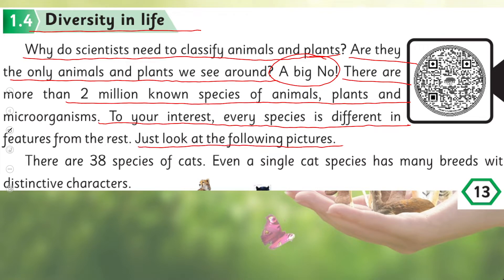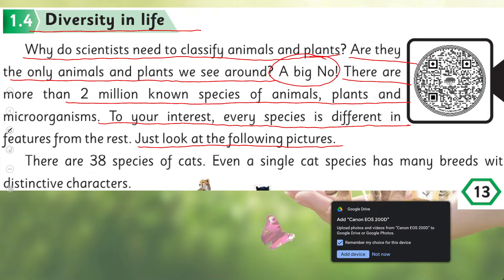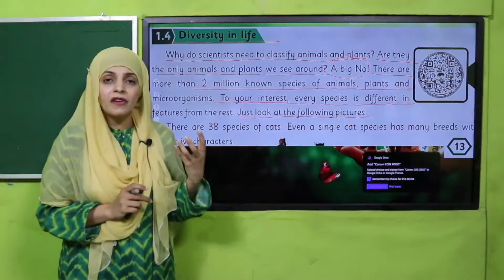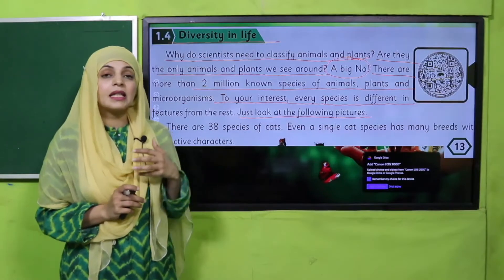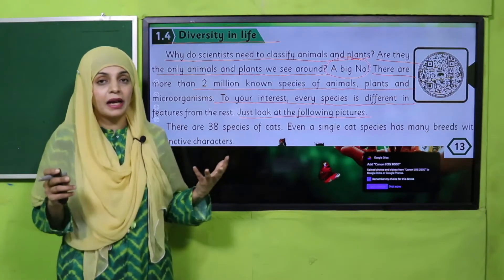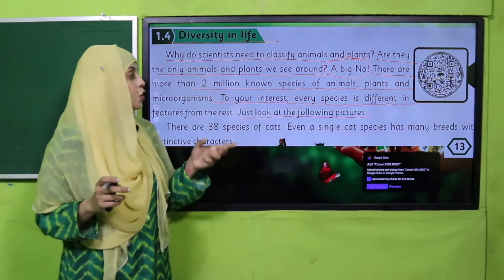Plants and animals are very different from each other. To properly study them, scientists classify them into groups so we can easily study them. Plants come in different varieties, just as animals also have a lot of variety.